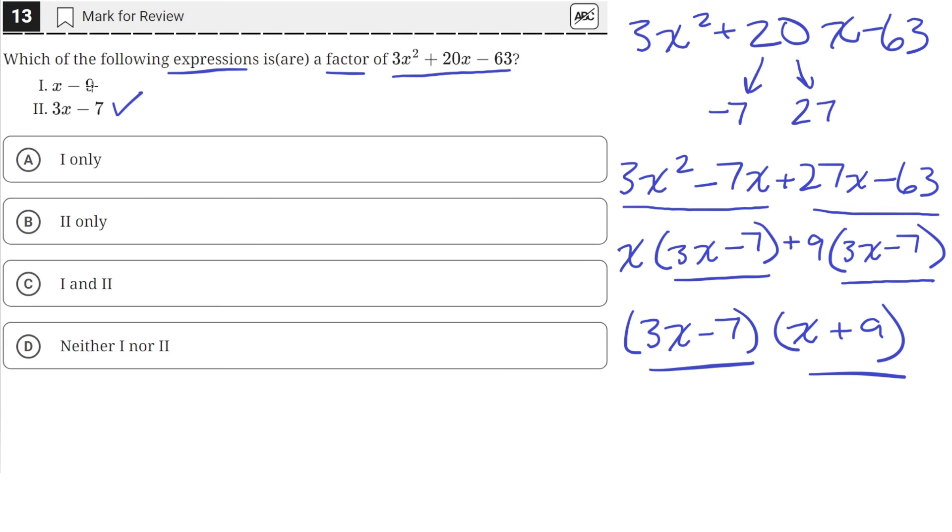And the first choice here says x minus 9 is a factor. But that's incorrect because x plus 9 is a factor. So this one is wrong. So that means the answer choice that is correct should only say that the second one is correct. So that is answer choice B. So B is the right answer.